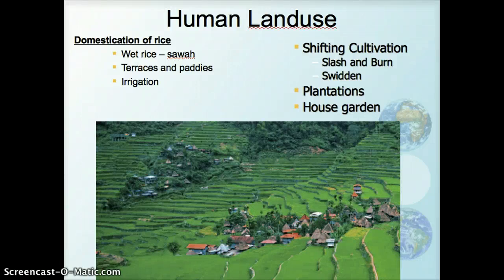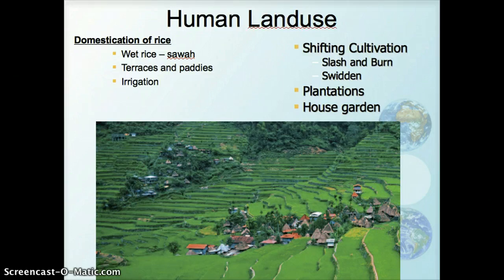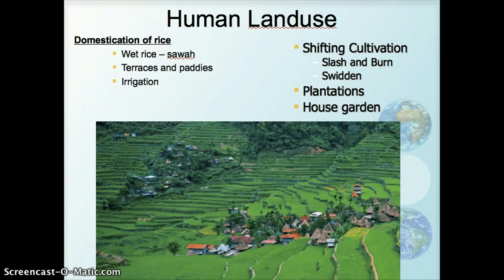In this video, I'm going to talk a little bit about land use and environmental issues, as well as the new International Division of Labor and how that's affecting Southeast Asia. If we think about the climate and physical geography in Southeast Asia, we know that a lot of it has a tropical rainforest-type climate and a lot of rainfall from the monsoon.